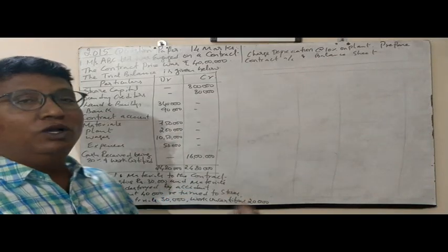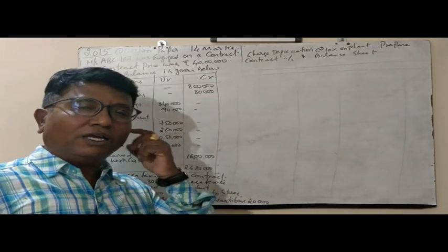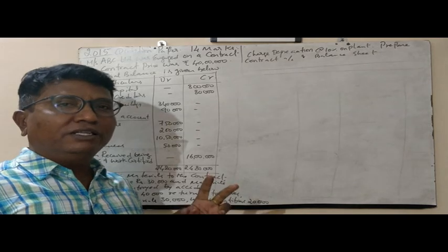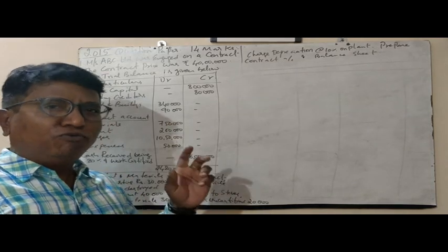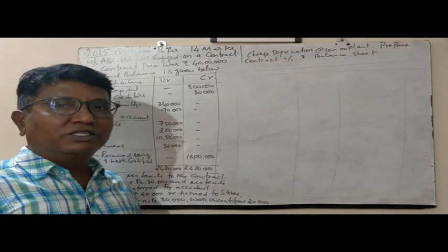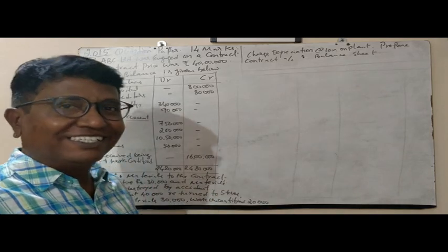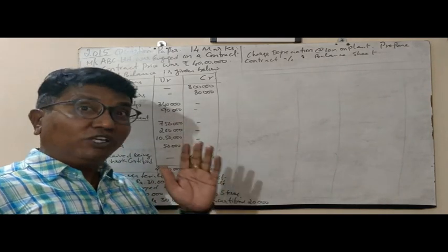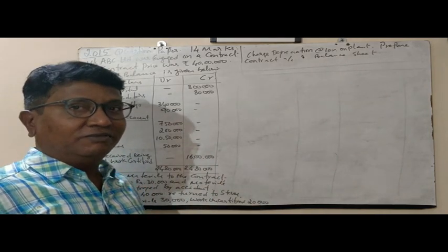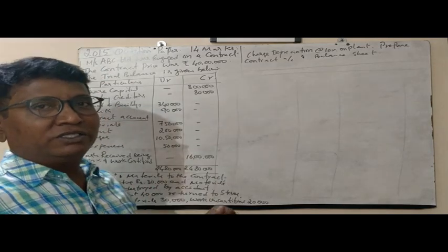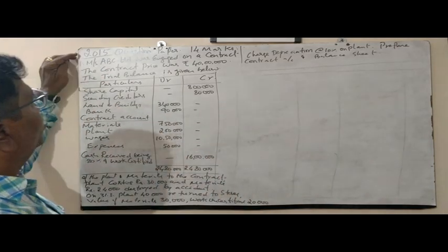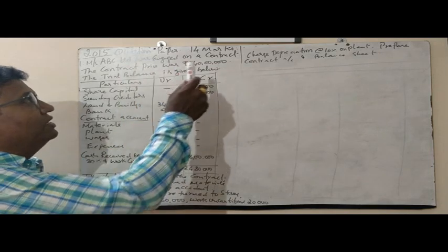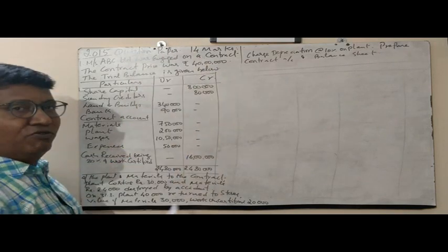Guys, now in contract account, contract costing, we have seen in the first video 6 marks questions for 2017 and 2016. Now we will concentrate on the 14 marks question. The 14 marks question I have taken from the year 2015, the 2015 question paper, which is asked for 14 marks.